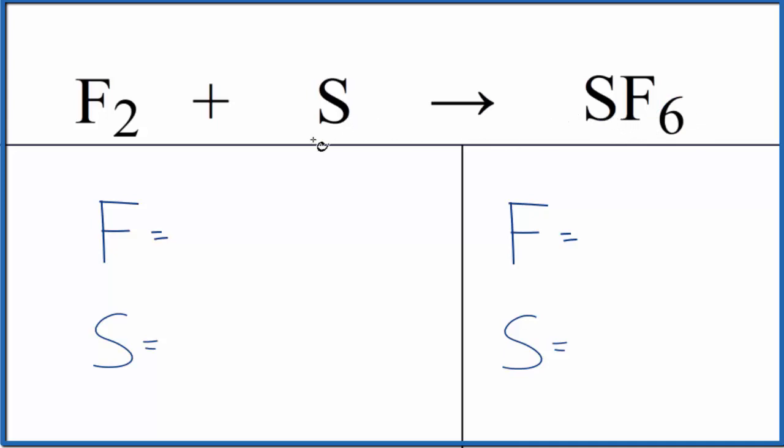First, let's talk about the type of reaction. We have these two substances coming together to form one substance. So this would be a synthesis or combination reaction. You could also call this redox because the fluorine and the sulfur change their oxidation states. Single displacement could be a redox reaction as well.